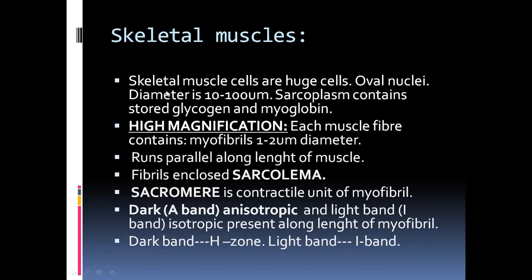Skeletal muscle cells have oval nuclei and a diameter of 10 to 100 micrometers. The sarcoplasm contains stored glycogen and myoglobin — glycogen as a source of energy, myoglobin for oxygen storage. Because of myoglobin, skeletal muscles appear red in color. Myoglobin is a storage pigment with a very high affinity for oxygen, unlike hemoglobin which is a transfer pigment that carries oxygen from one part of the body to another.